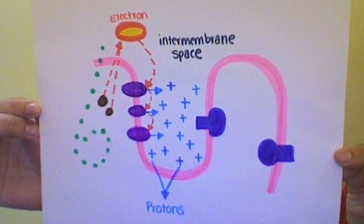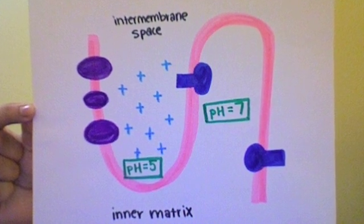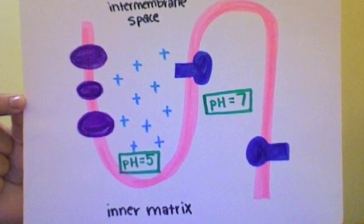Due to the excessive production of protons, the intermembrane space becomes acidic while the inner matrix remains neutral. As the electron is passed down through the cytochromes, eventually no more cytochromes remain — oxygen plays the role of the final electron receptor.